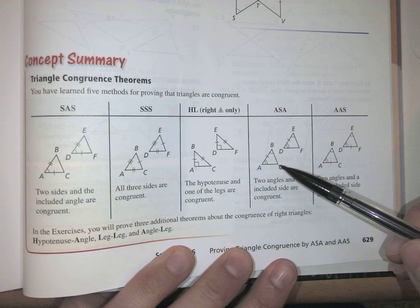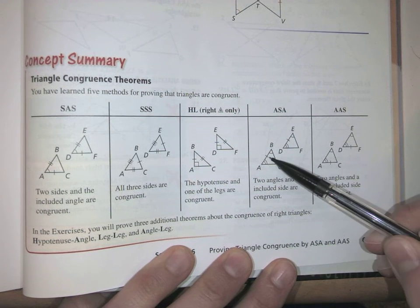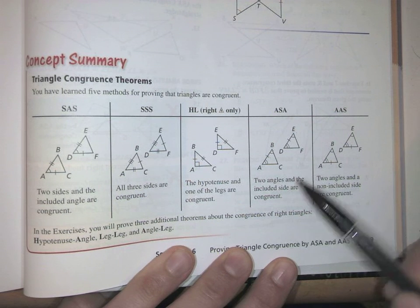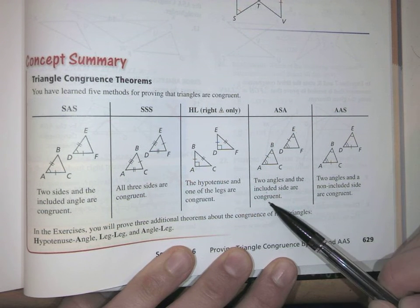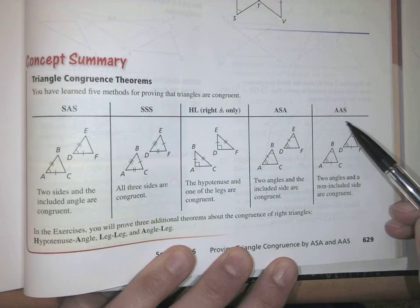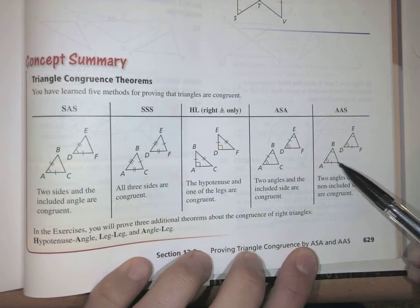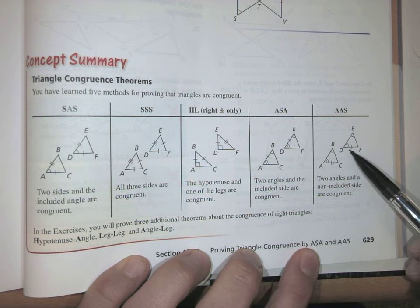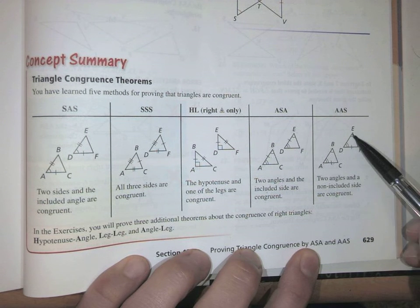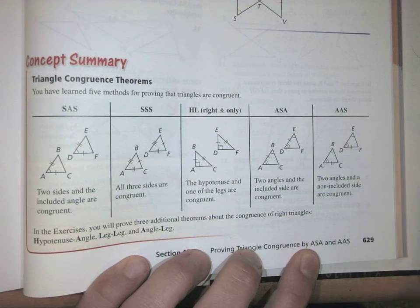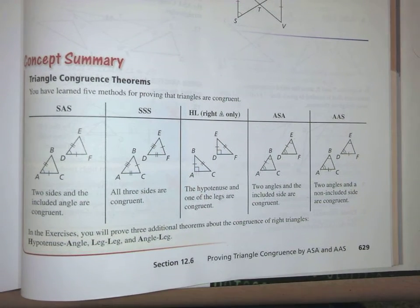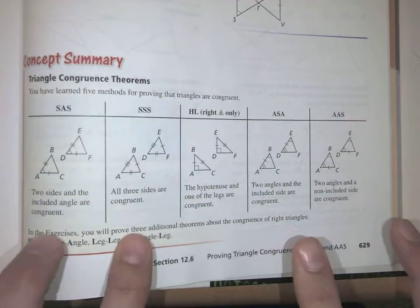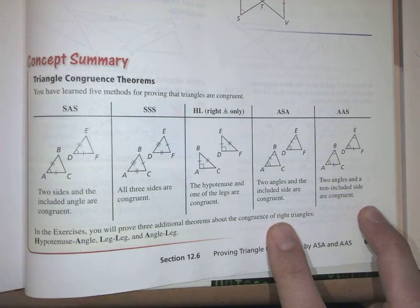If you have angle-side-angle — two angles and the included side — notice the side has to be in between the two angles, that's another way to show congruence. And the other one is angle-angle-side: two angles and a non-included side, but it has to be the corresponding side. So those are four congruence theorems you can use to show that two triangles are congruent with minimal information.